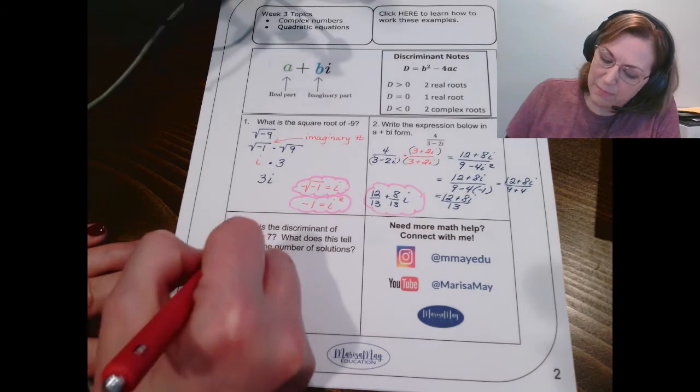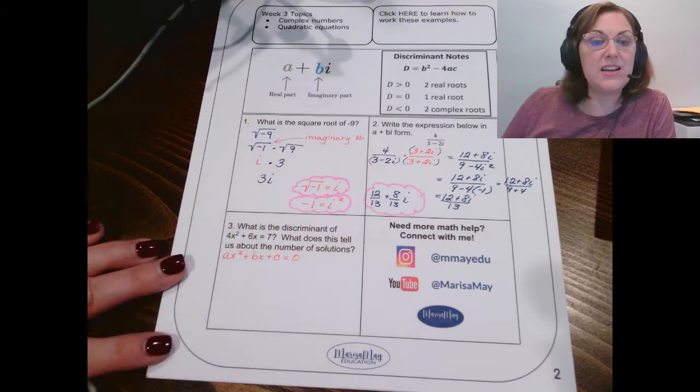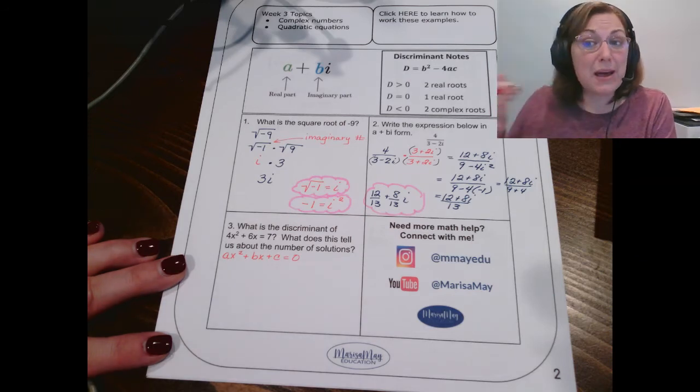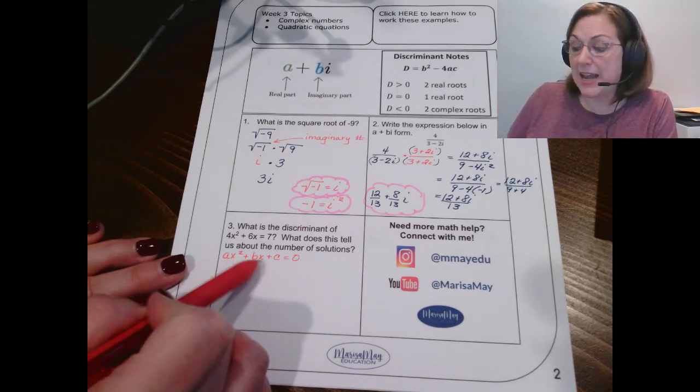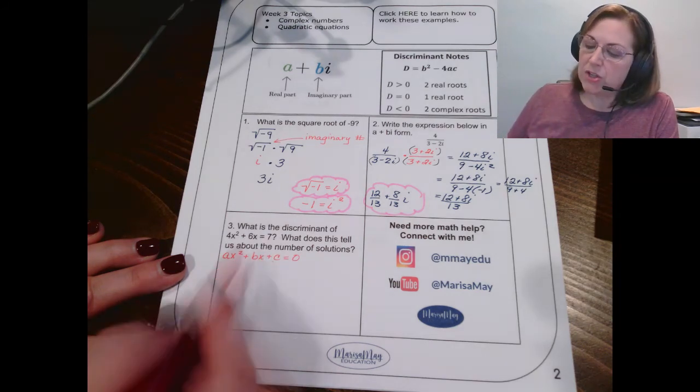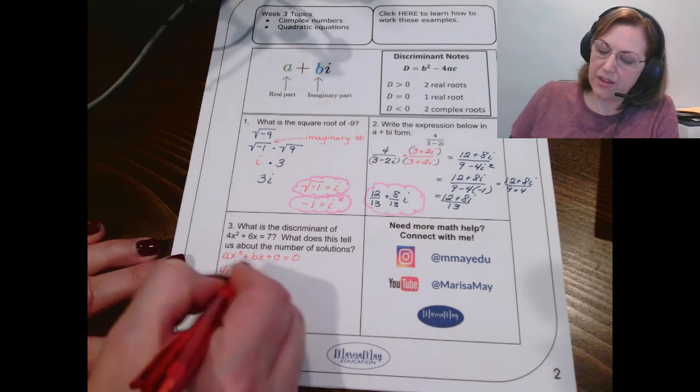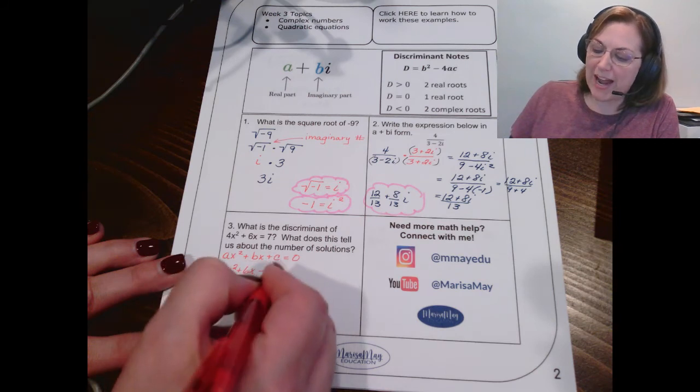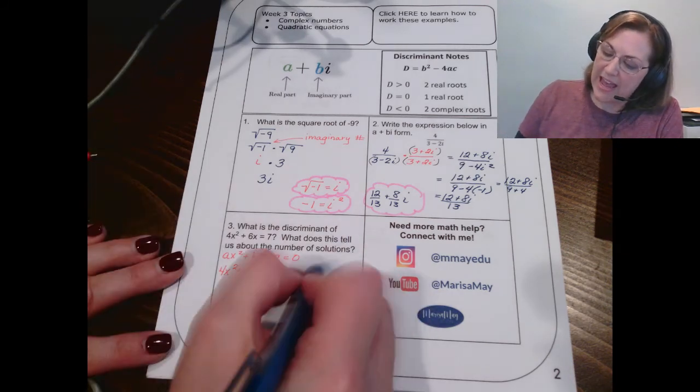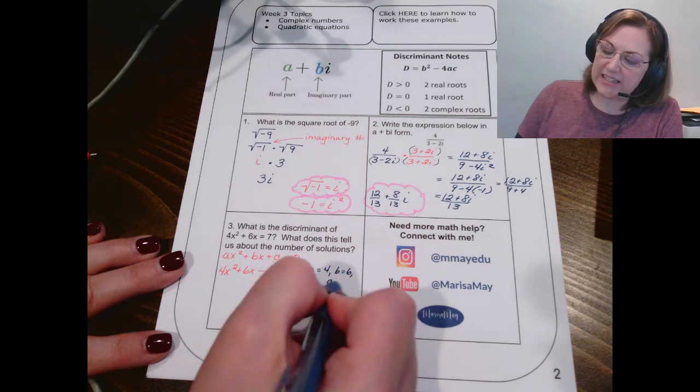Well, I'm glad you asked. Because when we write a quadratic equation in its standard form, we have A's and B's and C's. Those are the numbers in front of x squared is A. The number in front of x is B. The number by itself is C. So, I'm going to move this 7 over to the left to get it in the same order here. I'm going to move it by subtracting it so that you can easily see what A, B, and C are. A is 4, B is 6, and C is negative 7.